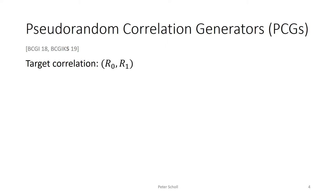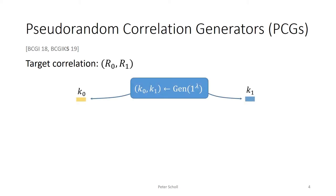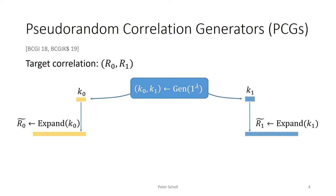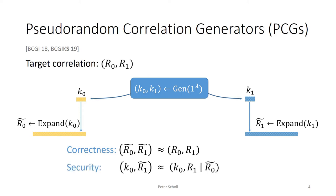A PCG is defined for a target correlation R0, R1, which might be, for example, a set of many oblivious transfers on random strings, or a large amount of multiplication triples. The PCG consists of two algorithms: a seed generation algorithm, which outputs a pair K0, K1 of correlated seeds, together with an expansion algorithm, which takes one of the seeds and locally expands it to produce a large pseudorandom output. There's a correctness requirement, which says that the two expanded outputs should be indistinguishable from an actual sample from the correlation. The security requirement says that even if given one of the seeds K0, the other seed's expanded output should be indistinguishable from an output of the correlation sampled conditioned on the expanded output from seed K0.